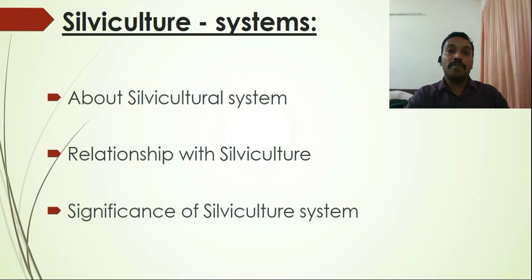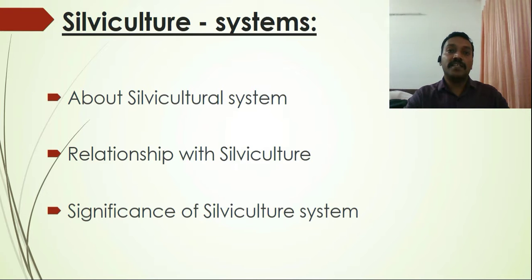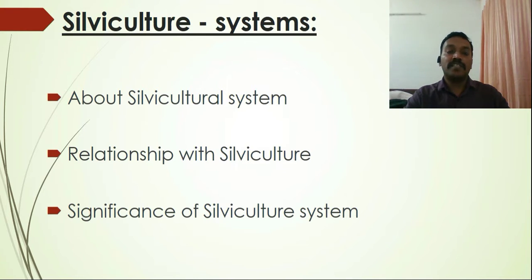Silviculture system is defined as the set of silviculture procedures applied in a given forest area by which the crop constituting the forest area is harvested, tended, and replaced by a new crop of distinctive form. In other words, the planned silviculture treatment applied to the forest crop through its life is also known as silviculture systems.